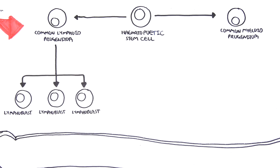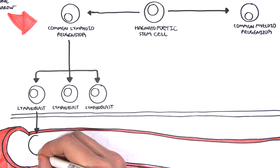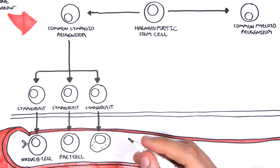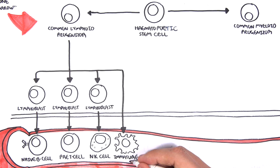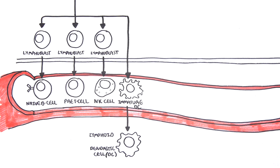As cells exit the bone marrow, they enter the blood. These different lymphoblasts with different genetic profiles will become either naive B cells, pre-T cells, or natural killer cells. Common lymphoid progenitor cells can also differentiate into certain types of dendritic cells, which move into tissues and become lymphoid dendritic cells. Dendritic cells are peripheral antigen-presenting cells that are very important in the connection between the innate immune system and the adaptive immune system.